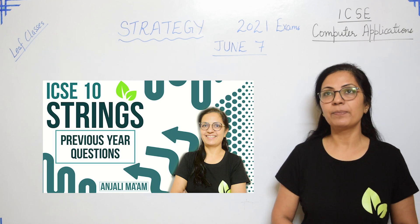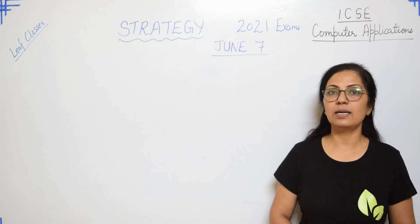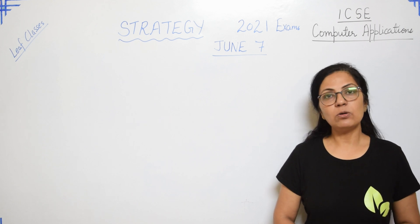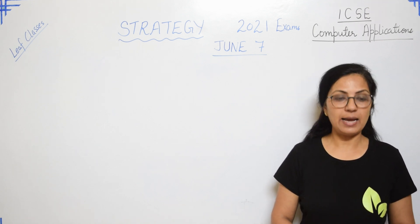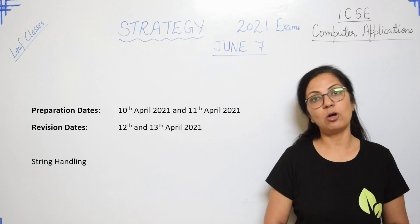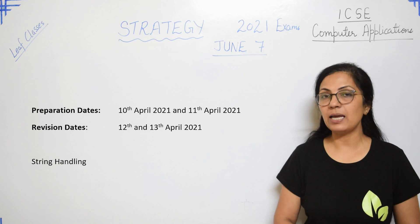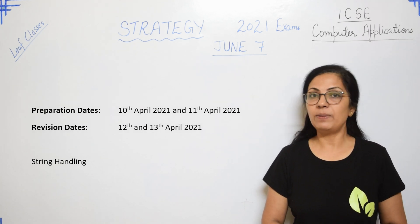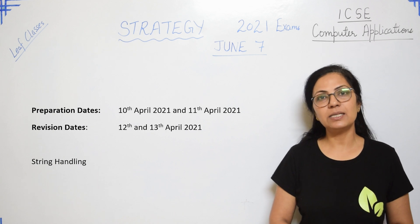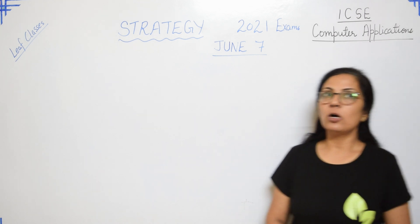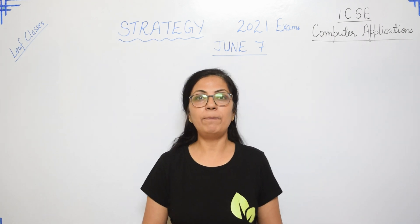Then we move on to the last topic — String Handling in Java. From this topic, no programming is there, string arrays are not there, and string programming is not there in the syllabus, so questions will be asked only in Section A from this topic. For this topic I have kept the dates 10th and 11th of April for preparation, and for revision I have kept 12th and 13th of April. So from 4th March till 13th April you should be able to complete your entire syllabus with revision.